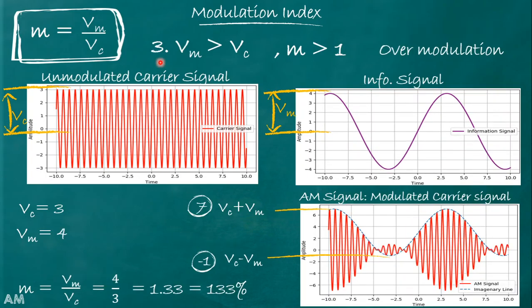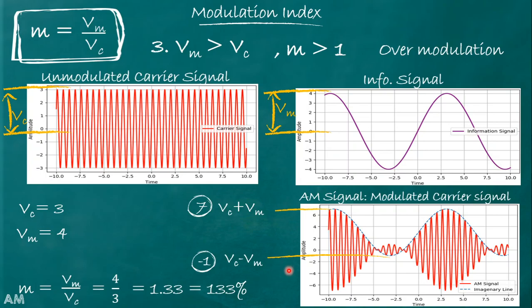Case 3: vm > vc, modulation index greater than 1. The unmodulated carrier has peak vc = 3, and the information signal has peak vm = 4. Modulation index = vm/vc = 4/3 = 1.33, or modulation depth is 133%. Maximum value of the envelope is vc + vm = 3 + 4 = 7, and minimum value is vc − vm = 3 − 4 = −1.